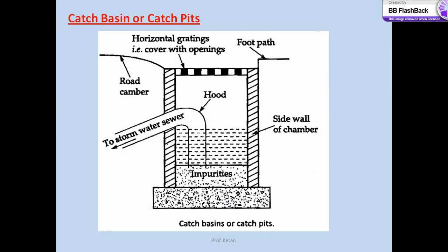Another appurtenance is the catch basin or catch pit. This is similar to the inlet or gullies. The only difference is there is a storm water sewer which has a hood and a shape nearly like a U. Whenever storm water enters through the horizontal grating cover it may carry impurities such as silt or inorganic matter. If allowed into the sewer, this may lead to choking. So the impurity settles and relatively cleaner water goes into the storm water drains.